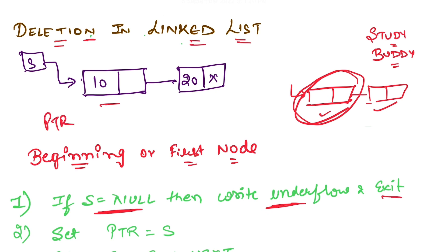So our s moves here, so pointer is here now. Because s was having this address of this first node, so our pointer and s is same, so it has moved here now.